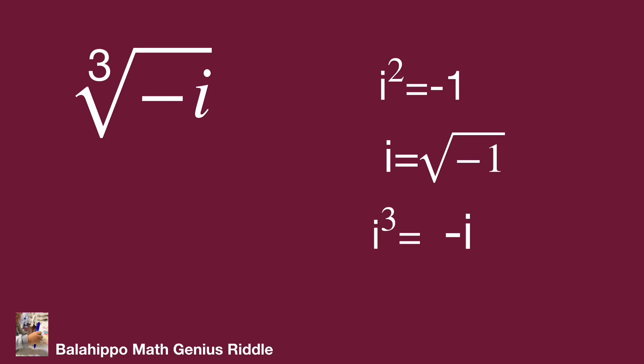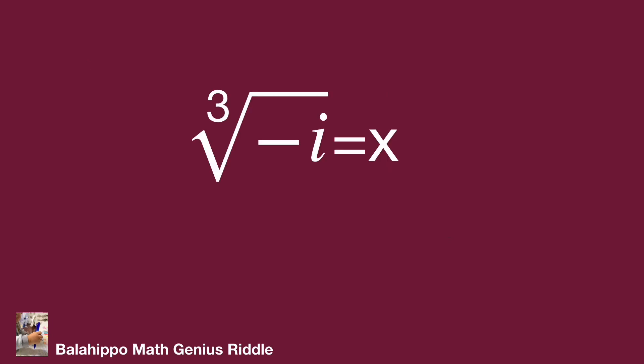Then back to the question to get a simplified value from cube root of minus i. So let cube root of minus i equal x, then try to remove the root. So cube both sides, then we have minus i equals x cubed.